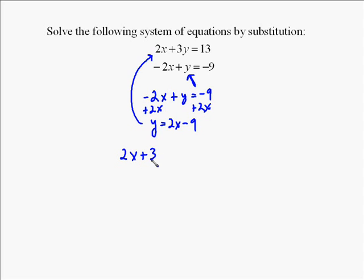Now that it's solved for y, we can go back and substitute 2x minus 9 in for y of the first equation. So we went in, and instead of writing 3y, we wrote 3 times 2x minus 9.